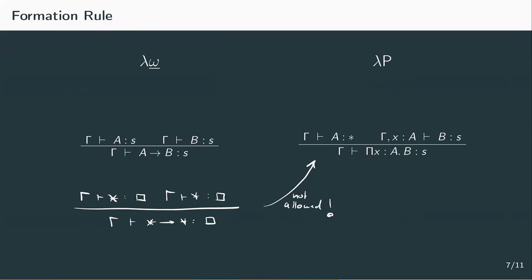As we observed in the introduction, in lambda P, this mapping from A to B doesn't have to be constant. So we need a variable X of type A, which we abstract over. And we also have to exchange A to B with the pi abstraction. Pi X of type A dot B.